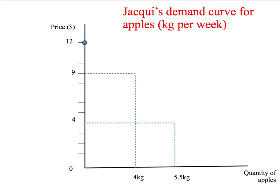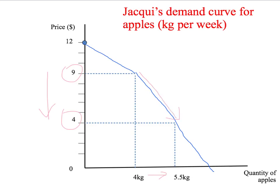If the price of apples is above $12 per kilogram, Jackie doesn't want to buy any apples. As the price drops, Jackie wants to buy more. Her demand curve goes through $9 and 4 kilograms — if the price is $9, she wants 4 kilograms. If the price drops to $4, she'd like 5.5 kilograms. When the price of apples changes, this is represented by a movement along Jackie's demand curve — a change in price leads to a change in the quantity demanded.